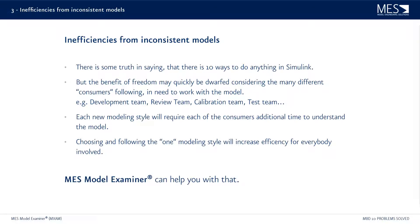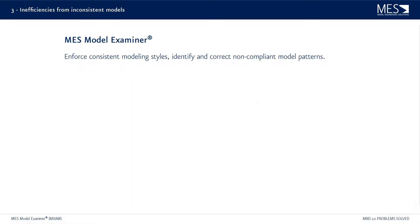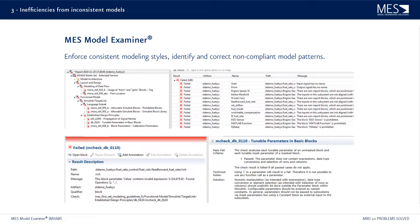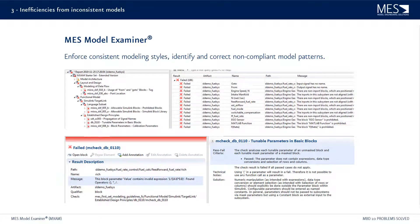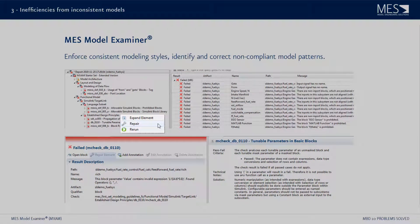The MES Model Examiner, or MXM, ensures that you stick to one modeling style. It allows you to enforce consistent modeling styles and identify and correct non-compliant model patterns. The list of guidelines giving recommendations on modeling styles is checked automatically, and any deviation will be listed as a failed finding. You can see details about why a specific failure occurred and how to solve the issue. You can even use auto repair on many of these guidelines to automatically repair your model.